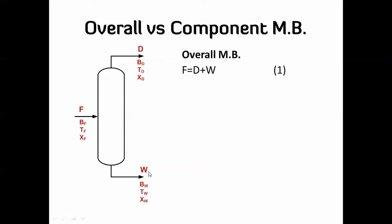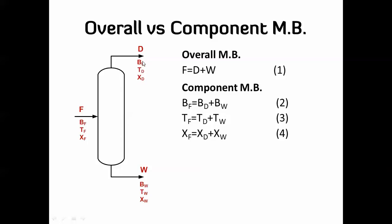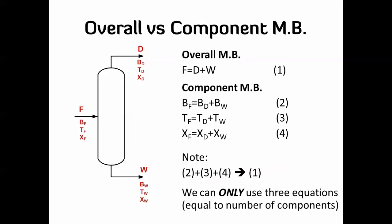When you go into the component material balance, you do it for each species. So the B going into the system equals B coming out in the distillate plus B in the bottom product, and the same for T and X. In this case you have one overall equation and three component material balance equations equal to the number of components. However, these are considered only three independent equations, not four, because the summation of the three component equations gives you the overall material balance equation. So you can only use three equations since the fourth is dependent.